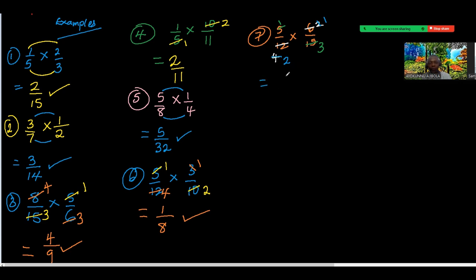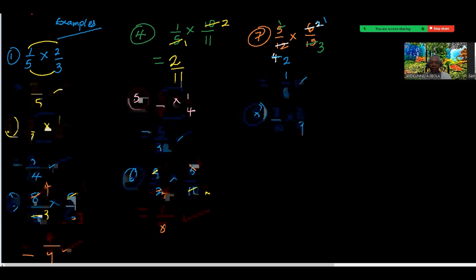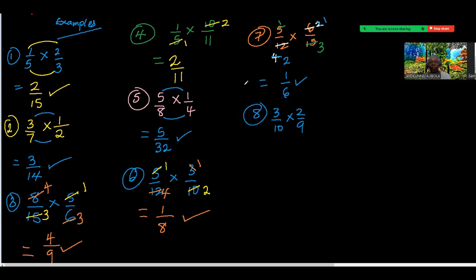So we finally have 1 over 6. Number eight: 3 over 10 times 2 over 9. But actually looking at this again, let me use 3 over 10 times 5 over 6. What number is common that can divide both above and below?